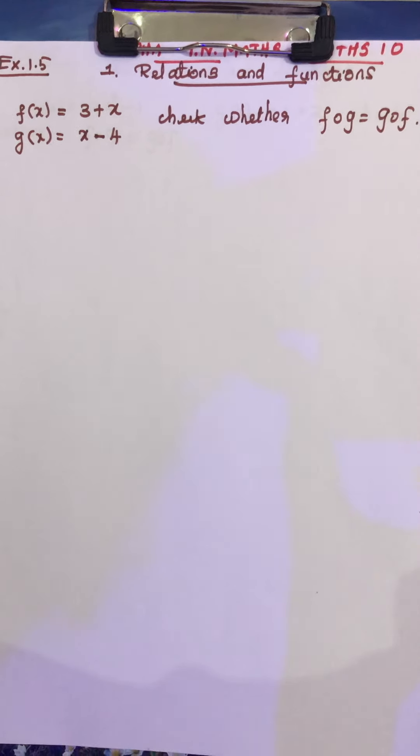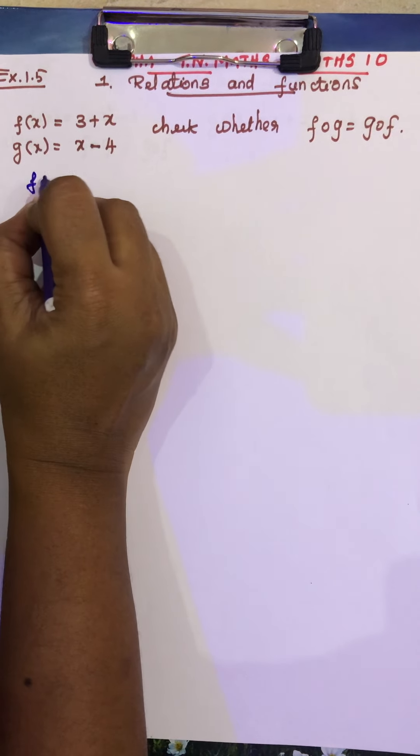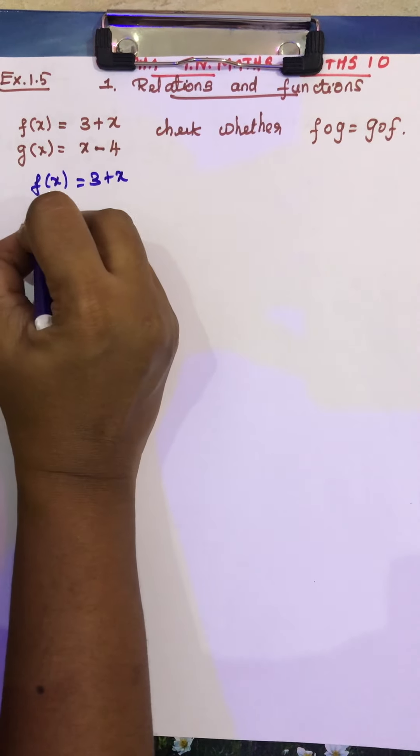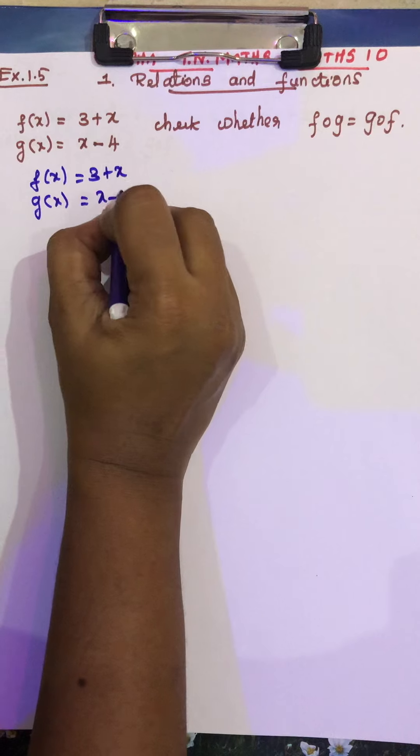So, it is very simple. See, f of x equals 3 plus x, g of x equals x minus 4.